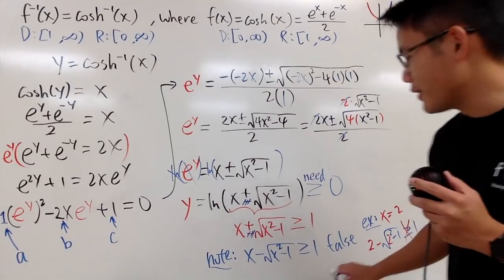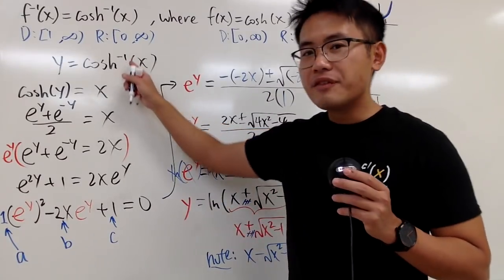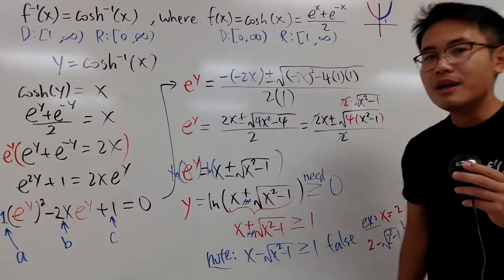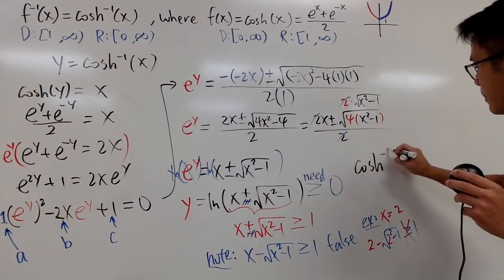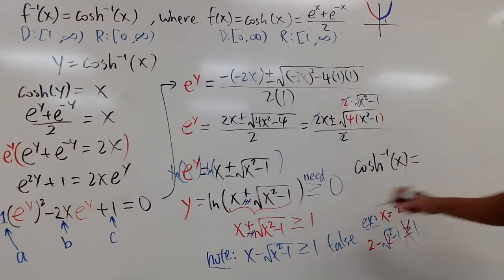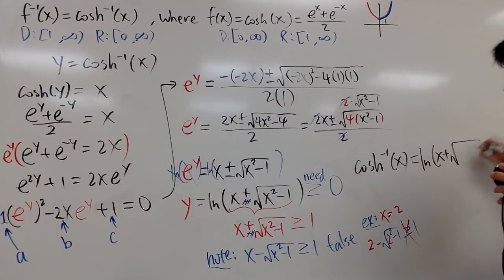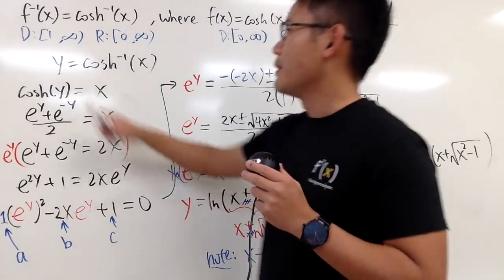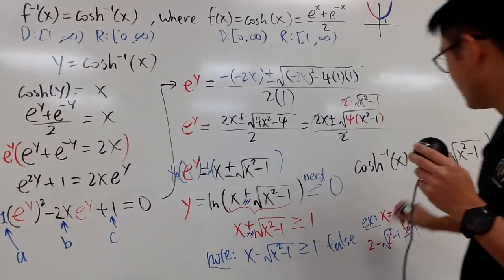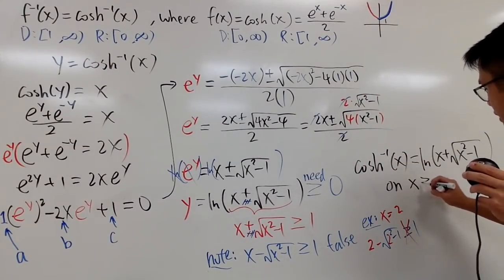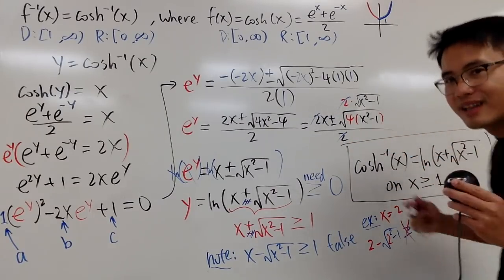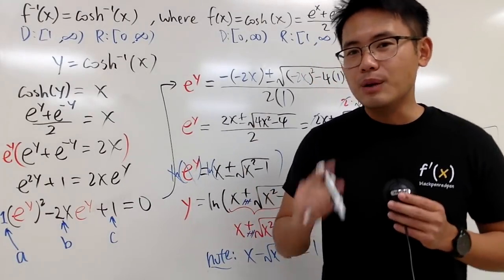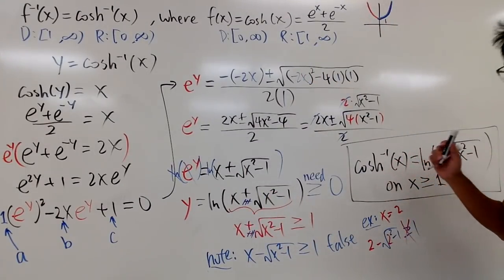Therefore, y — which is the inverse hyperbolic cosine — equals ln(x + √(x² − 1)). So the inverse hyperbolic cosine function is: cosh⁻¹(x) = ln(x + √(x² − 1)), with domain x ≥ 1. And we are done. Coming up next, I will show you how to differentiate the inverse hyperbolic cosine function.